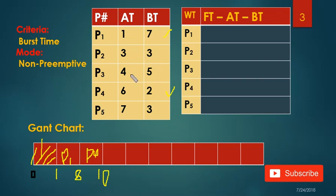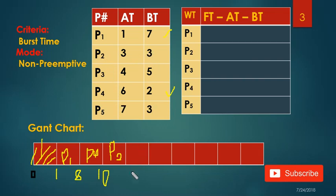Now I'm going to check which process has the least burst time from P2, P3, and P5. P2 and P5 have the same burst time, so I'm going to check according to arrival time — P2 arrived earlier, so I'm going to put P2 next. The burst time for P2 is 3, so 10 plus 3 is 13.